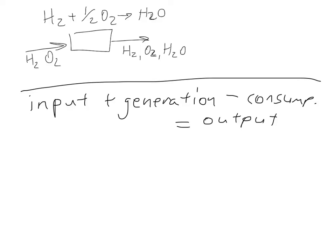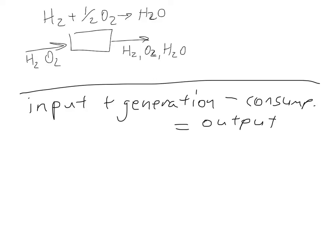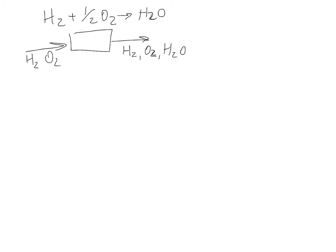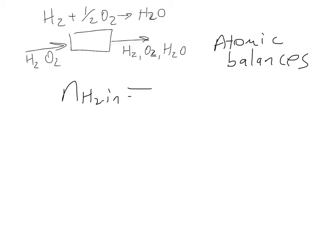So that's one method. Another method is using atomic balances. When we have this reactor, it is not true that the amount of moles of one of the reactants or products is equal going in versus out. So N_H2 in does not equal N_H2 out, because we have a reaction taking place and the number of moles of H2 is changing. We could write a similar equation for O2 and water — the amount of moles coming in and out are not the same.